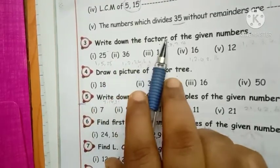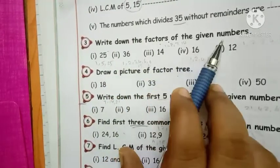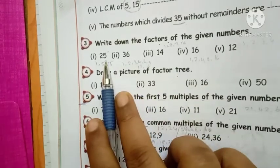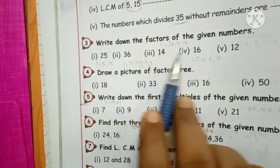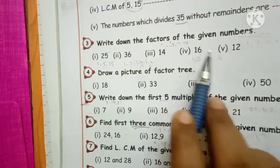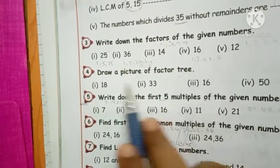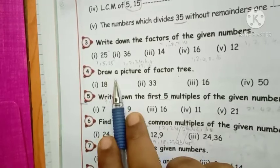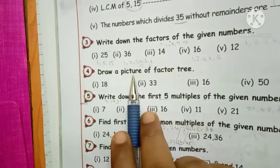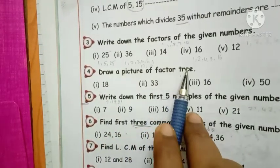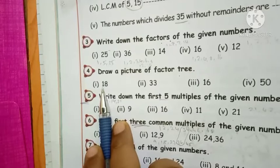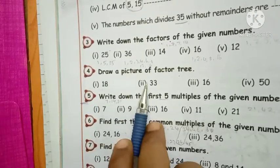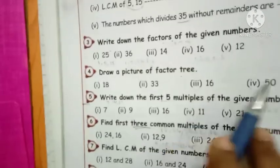Write down the factors of the given numbers — this is completed for 25, 36, 14, 16, 12. Then next one: draw a picture of factor tree. Numbers given are 18, 33, 16, 15.